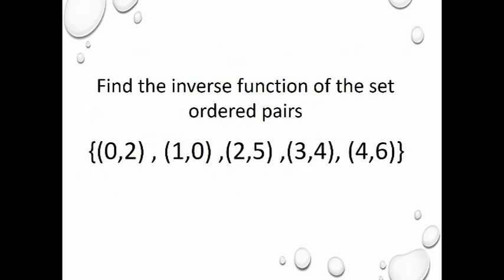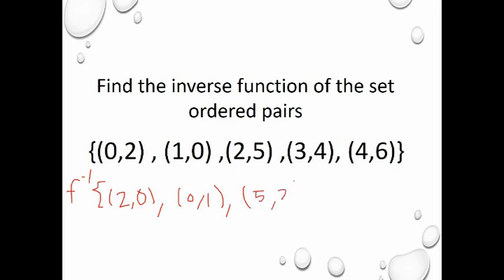For example, if you're going to find the inverse function of the set of ordered pairs {(0,2), (1,0), (2,5), (3,4), (4,6)}, then f⁻¹ will be {(2,0), (0,1), (5,2), (4,3), (6,4)}. That is the inverse of the given ordered pairs — the x and y coordinates are simply swapped.